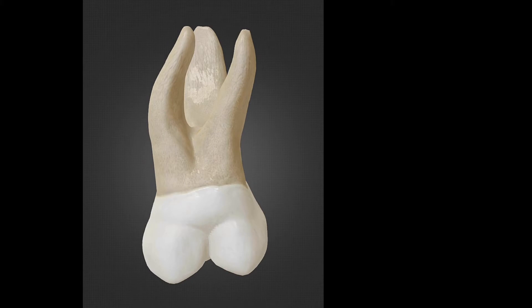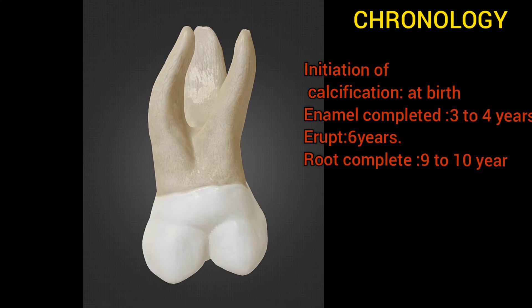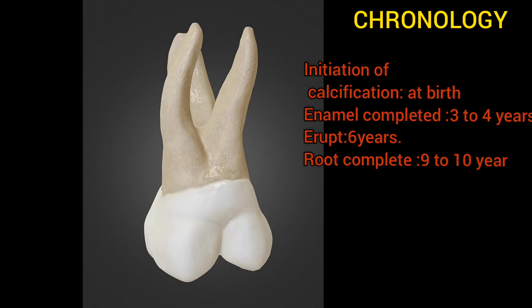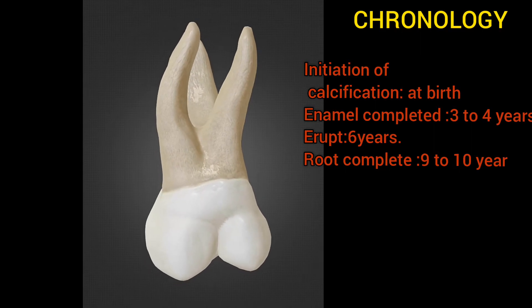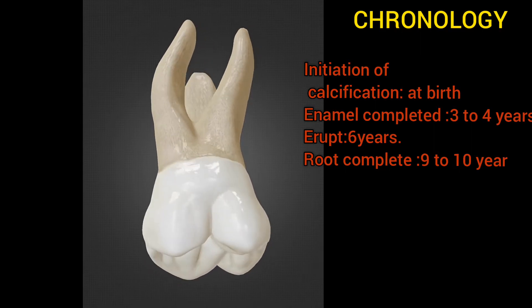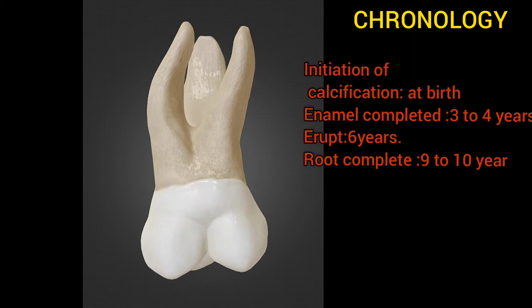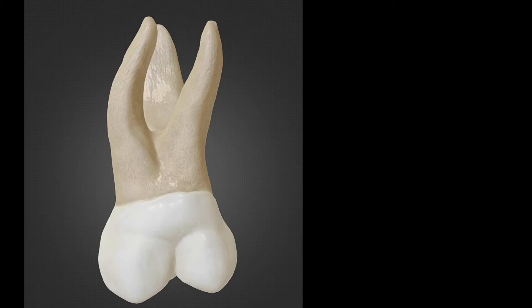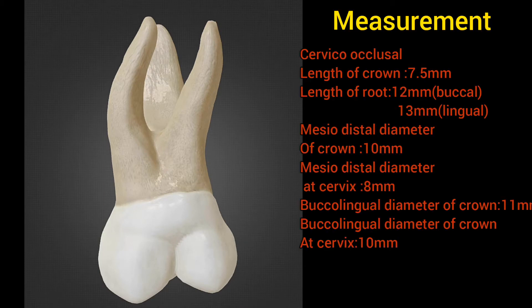Now let's look at the chronology. Initiation of calcification starts at birth. Enamel is completed at three to four years, and this tooth erupts at the age of six years — that's why it is also called the six-year molar. Root completion occurs at nine to ten years.